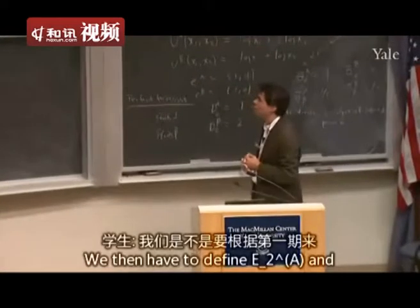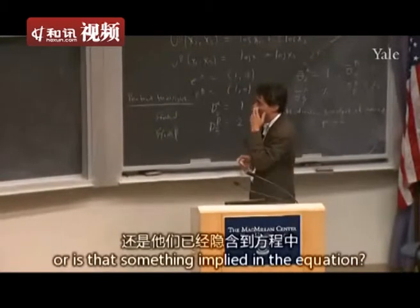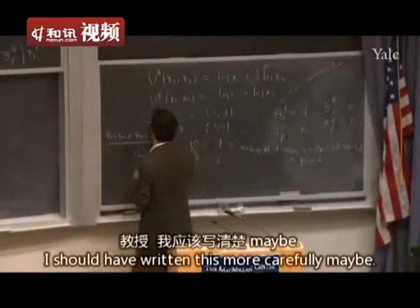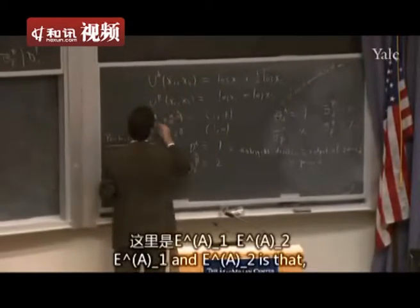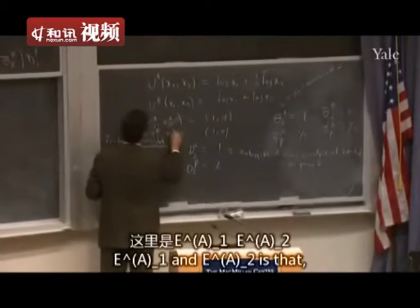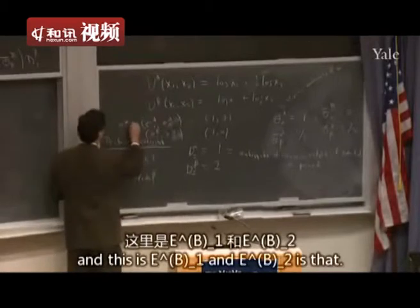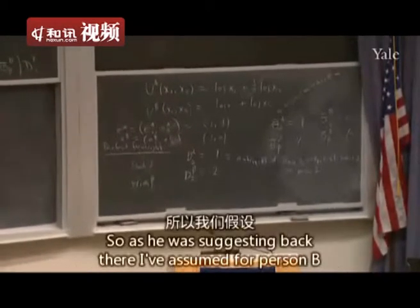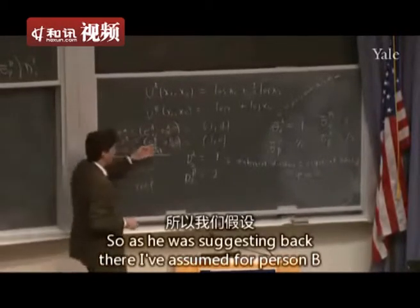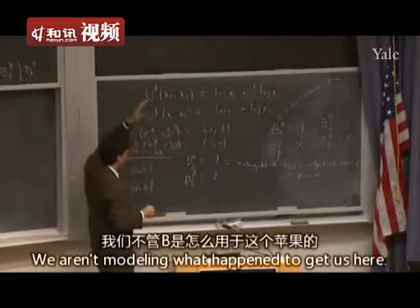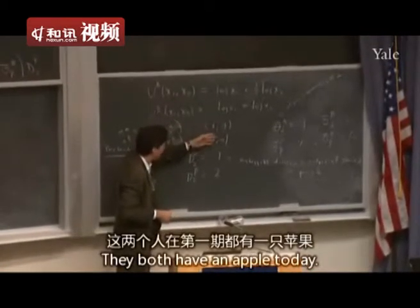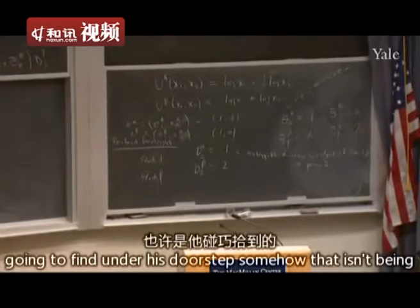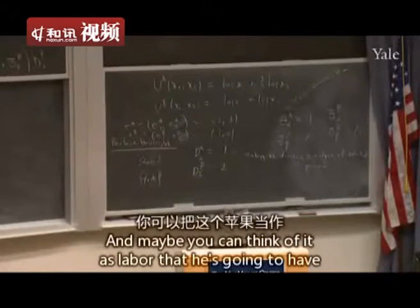Do we have to define E_A2 and E_B2 in terms of first-period endowments? E_A is (1, 1) and E_B is (1, 0). So as someone suggested, for person B I've assumed he's got an apple now. We aren't modeling what happened to get here — he just has an apple today. A is also going to have another apple tomorrow, maybe under his doorstep, that isn't being produced by the tree. Think of it as labor he's going to have next period.